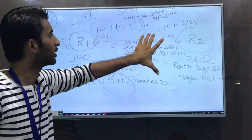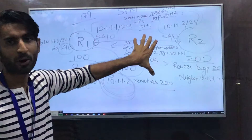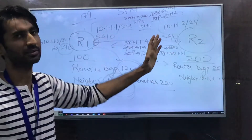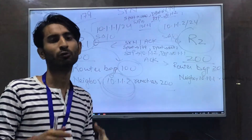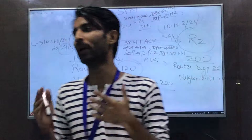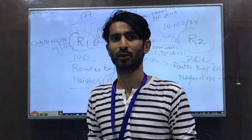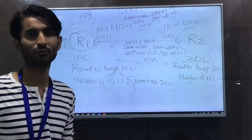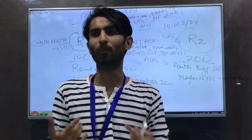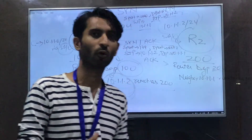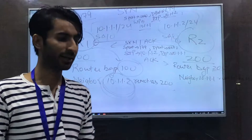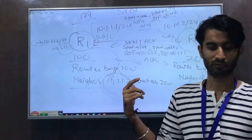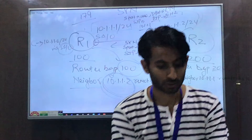That covers basic BGP neighbor formation using physical interfaces. However, in production networks, BGP neighbors are never formed via simple interfaces. The preferred method is to use loopback addresses. We will discuss why loopback-based neighborhoods are necessary, and then do a practical demonstration of the simple configuration first at the CLI.